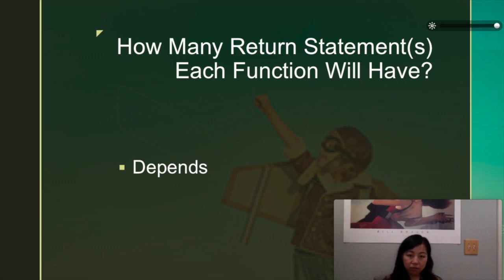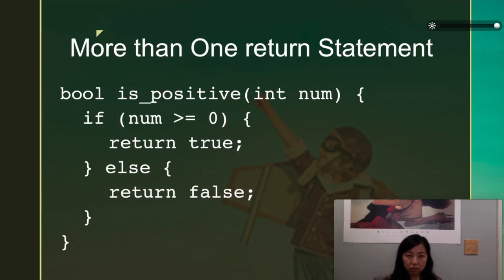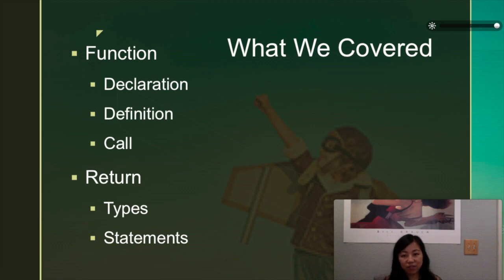So how many return statements each function will have? It depends. For example, this case that more than one return statement makes sense, because why? In a boolean function, sometimes it will have to return true. Sometimes it will have to return false. So let's say if we want to check if a number is positive, we write a function called is_positive. And then we input the number as the parameter. So if that number we checked is bigger than or equal to zero, like when we were doing the module two lab assignment, then you will return true. Otherwise it will return false.